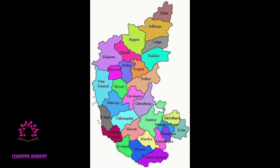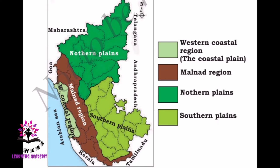We have already learned about physical features in your previous class. Now let us learn more details about the physical features of our state — that is, how Karnataka is divided into four physical regions. The first is the Western Coastal Region, also known as the Coastal Plain. The second is the Malnaad Region. The third is the Northern Plains, and the last one is the Southern Plains.